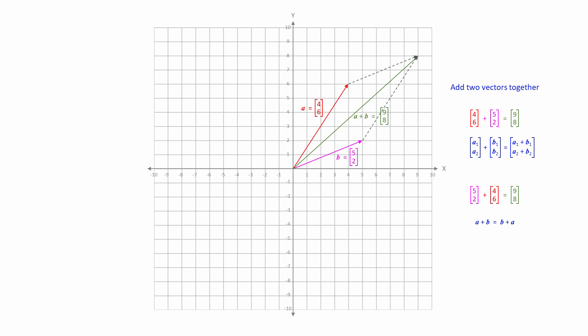This might strike you as trivial. After all, 1 plus 2 is the same as 2 plus 1. But it is important. This is known as the commutative law or the parallelogram law of vector addition.